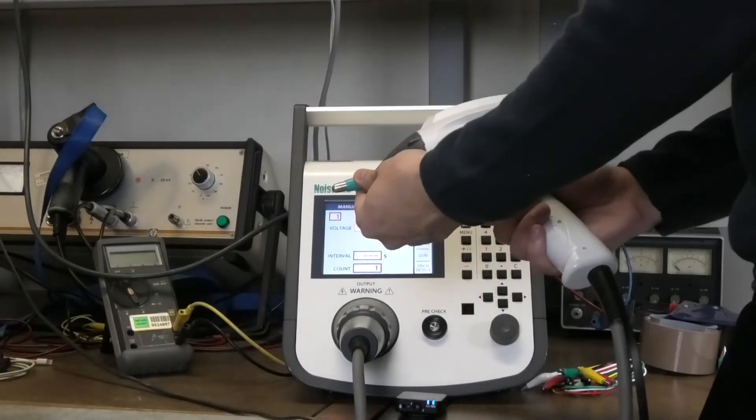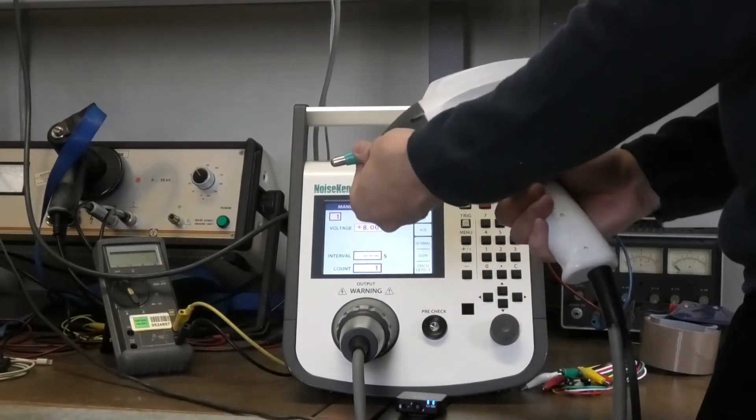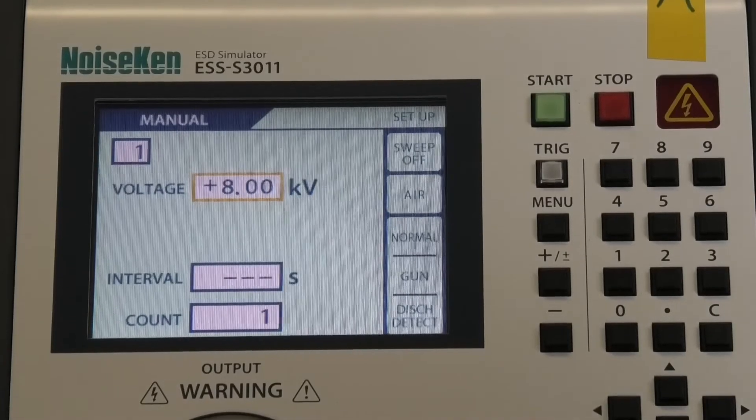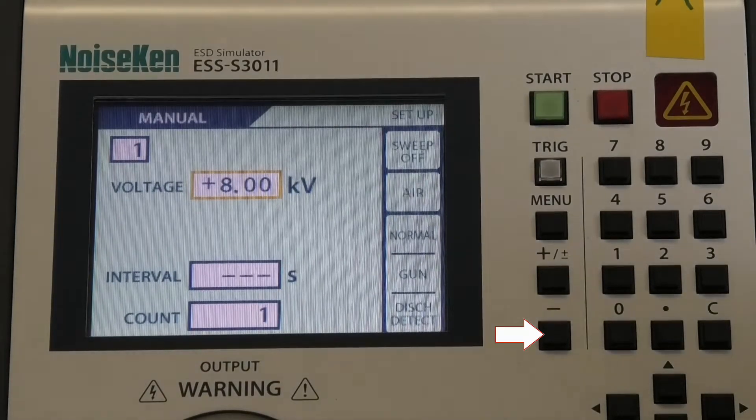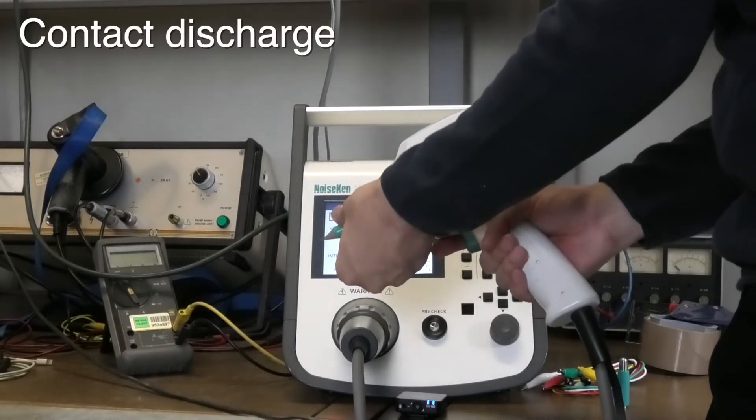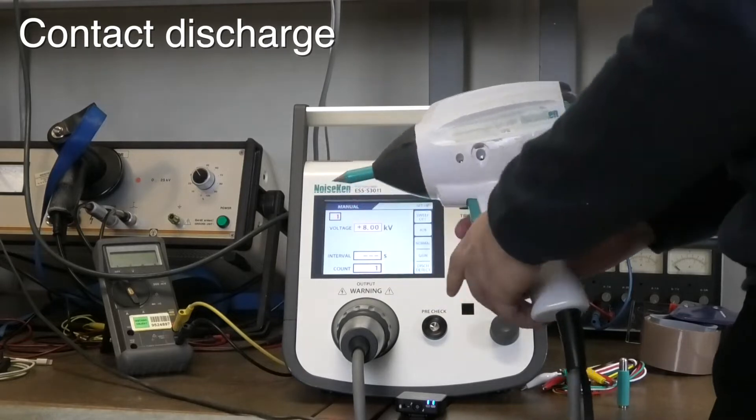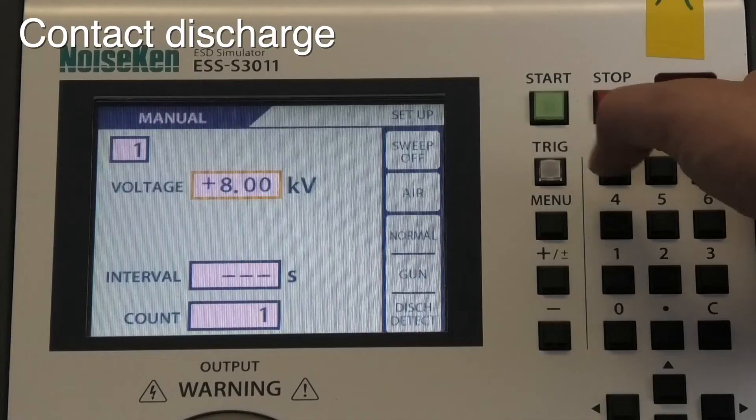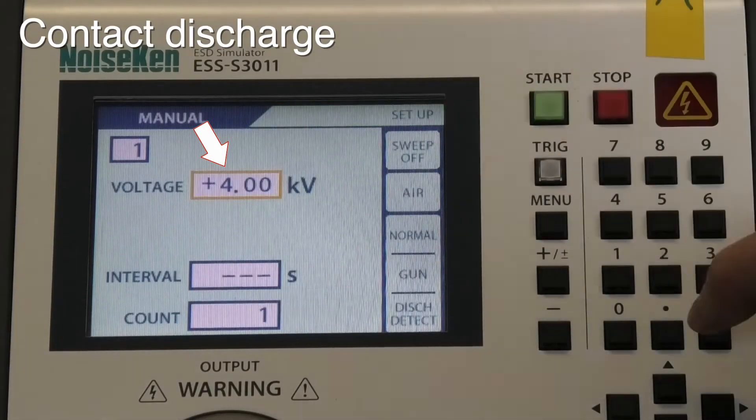In a real compliance test measurement we would have to work way more accurate. We would also have to test with negative polarity for example. But in our video we will proceed with contact discharges now. Therefore we now switch to the pointy tip and reduce the test voltage to 4 kilovolts.